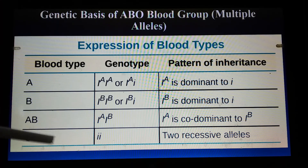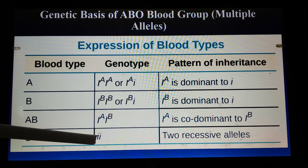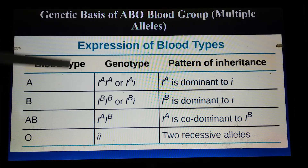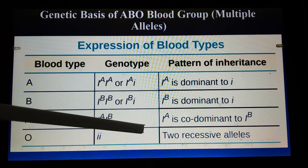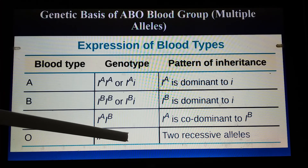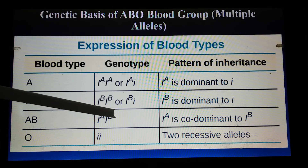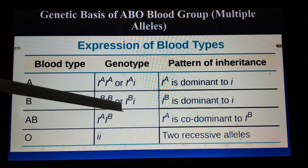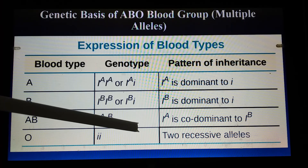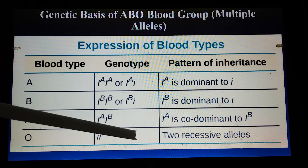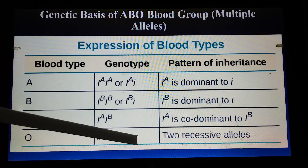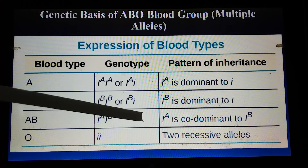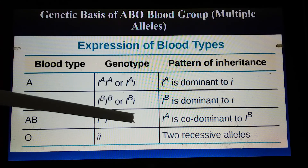A person with blood group O has no antigens A or B but has antibodies A and B. I hope the blood types, their genotypes, dominant and recessive alleles, and their inheritance pattern are now clear. I will discuss the next topic related to the ABO blood group system — the Rh factor — in detail in my next lecture. If you have any questions, ask me and I will try my best to answer. Thank you very much. Kindly like, share, and subscribe to my channel.